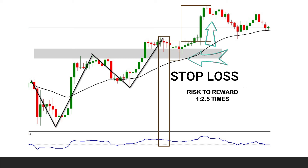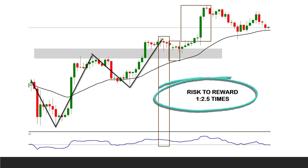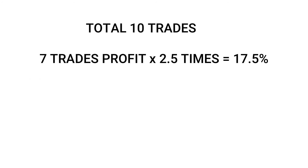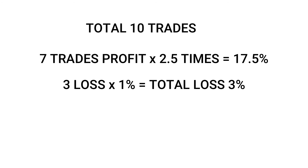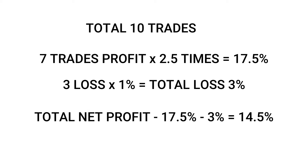Once that hammer candle is complete, you can put your buy trade on the completion of that hammer candle and put your stop loss either below the support zone or below the EMA. In this example, the market continued going upwards and gave a risk-to-reward ratio of 1:2.5. If you take 10 trades and get 7 profitable ones, you lost 3% in your 3 losses, and in your 7 profits you win 7 × 2.5 = 17.5%. Subtracting the 3% losses, you are left with 14.5% profit after 10 trades.